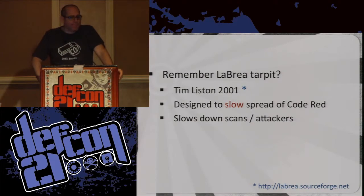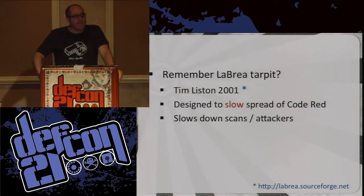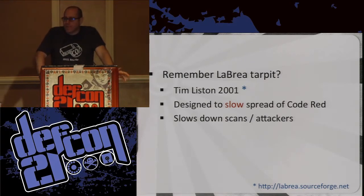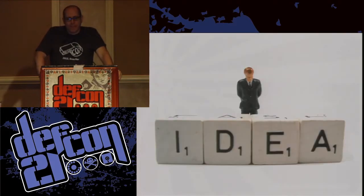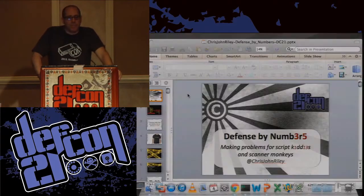Does anyone remember the LaBrea tarpit? It was originally designed by Tom Liston to slow the spread of Code Red and slow down attackers. Did we forget that this was a great idea? In our drive to find new and interesting research, it's been done once so we just ignore it. So I had this interesting idea — how about an HTTP tarpit? Simple scenario: the WAF detects the scan, adds the IP address to the naughty list, and then starts to rewrite all the responses. You get the usual 100, 101, 102 status codes — just randomly rotate between them depending on how bored you are. You can also use 204 and 304, but they're not nearly as fun as the 100 status codes.